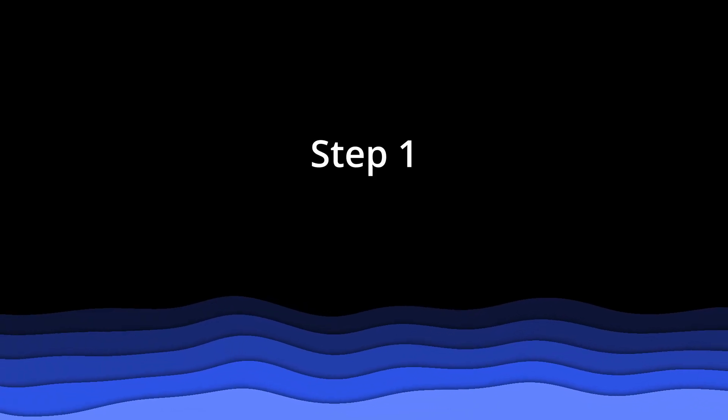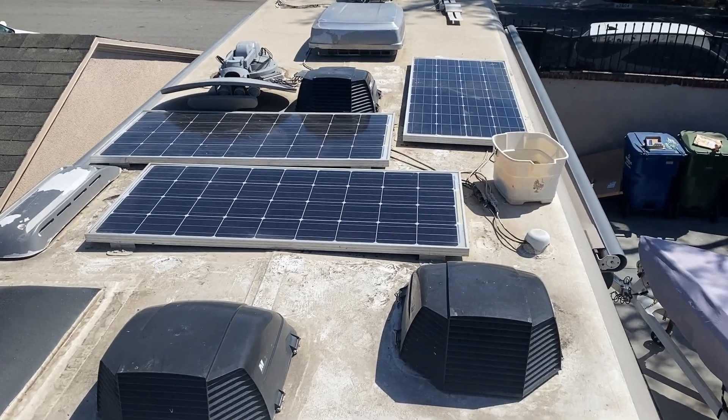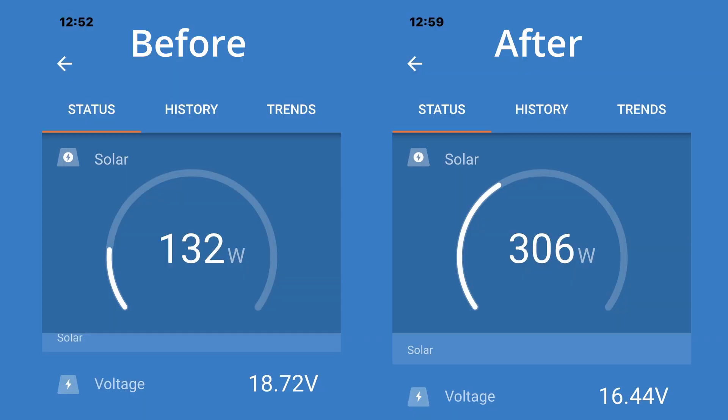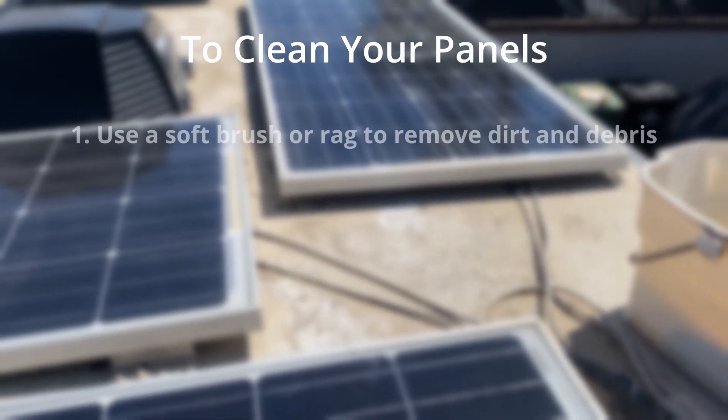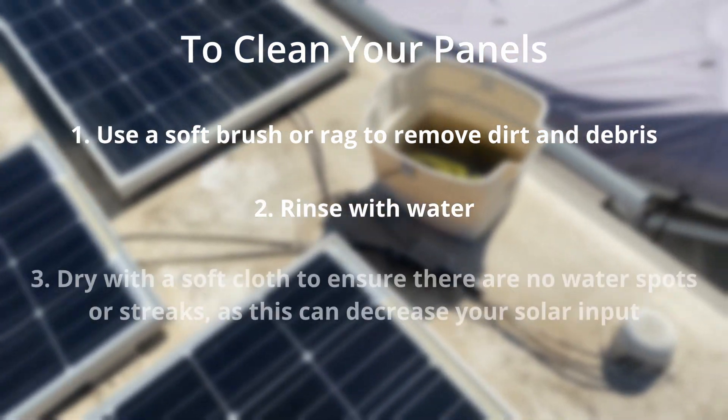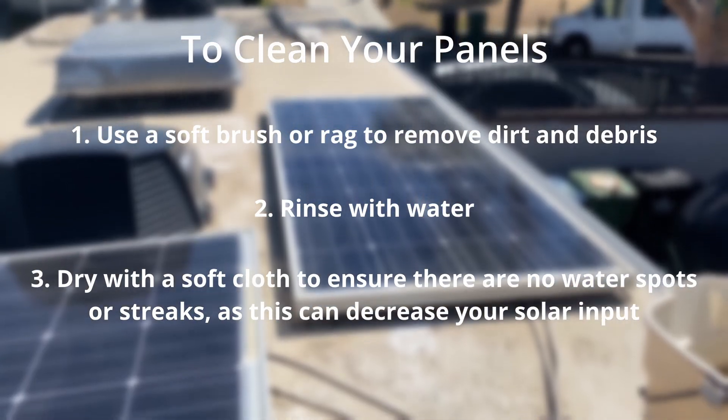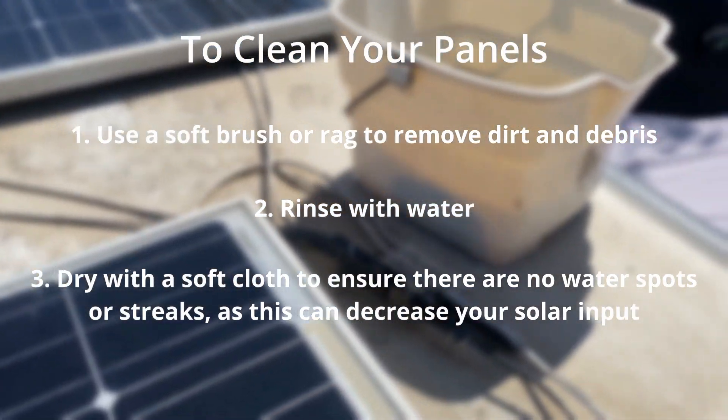The first step to increasing your solar output is to clean the panels. When I arrived the panels were filthy. It took me five minutes and I was able to more than double the solar panel efficiency. To clean your existing panels use a soft brush or a rag to remove dirt and debris. Rinse with water and dry with a soft cloth and make sure there are no streaks or water spots as these can reduce the efficiency of your panels.